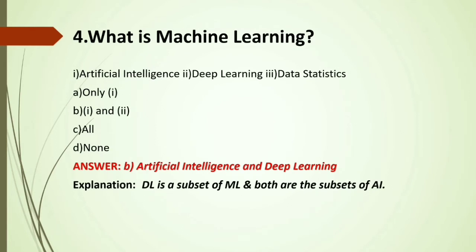MCQ: What is machine learning? Options: A) Artificial intelligence; B) Deep learning; C) Data statistics; D) One and two only. The relationship is that deep learning is a subset of machine learning, and both machine learning and deep learning are subsets of artificial intelligence. Data statistics also comes under those topics. Answer: Artificial intelligence and deep learning.